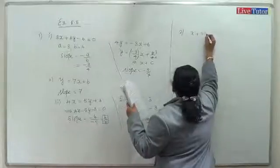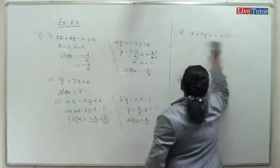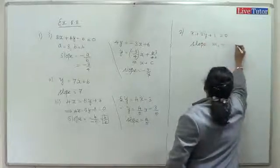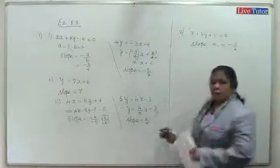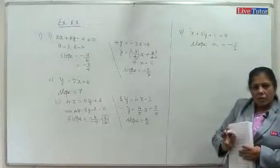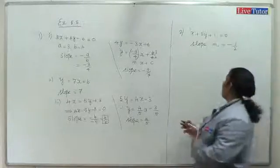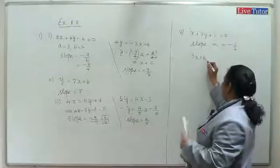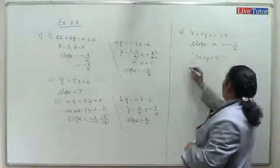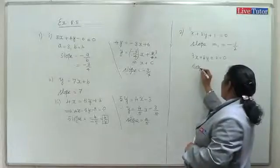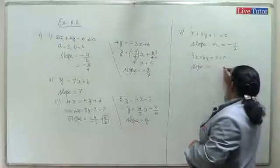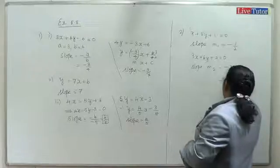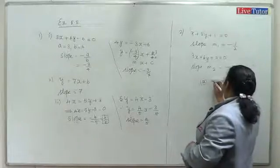For x plus 2y plus 1 equals 0: slope m1 equals minus 1 by 2. For 3x plus 6y plus 2 equals 0: slope m2 equals minus 3 by 6, which simplifies to minus 1 by 2. So m1 equals m2.